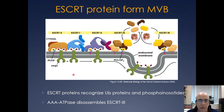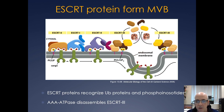Here is your receptor with your cargo — it's got ubiquitin on it. You have PI3P and that's recognized by ESCRT-0. It then gets passed off to ESCRT-1 and ESCRT-2, and then eventually it gets put into one of these inverted vesicles. There's a AAA ATPase that helps push everything in here.